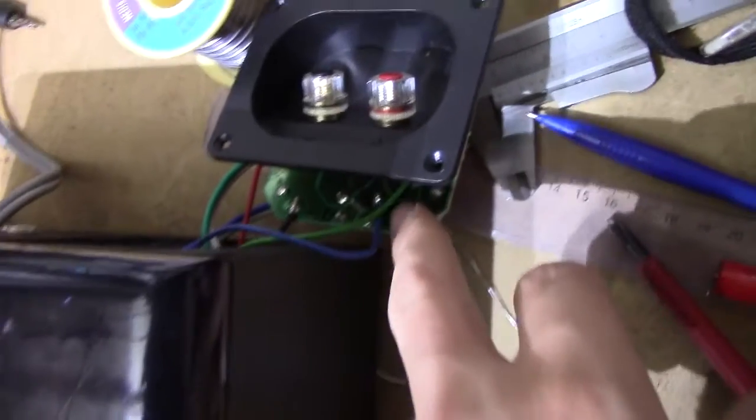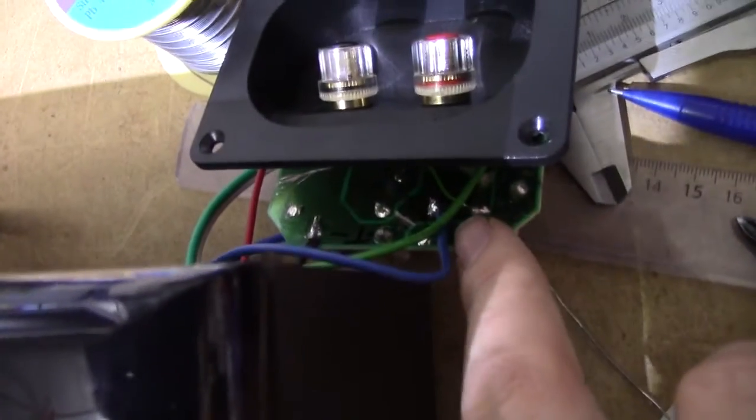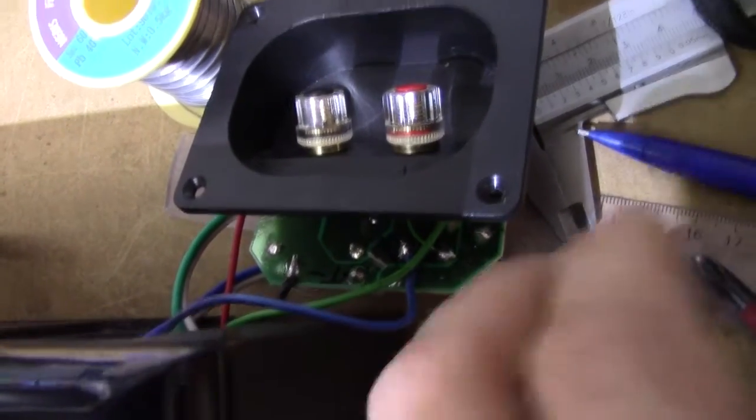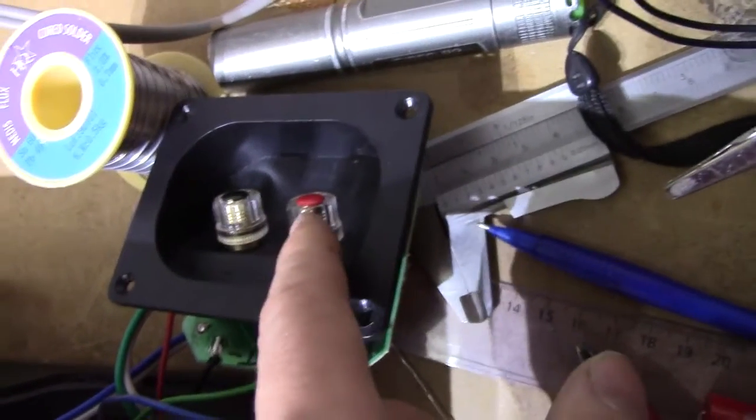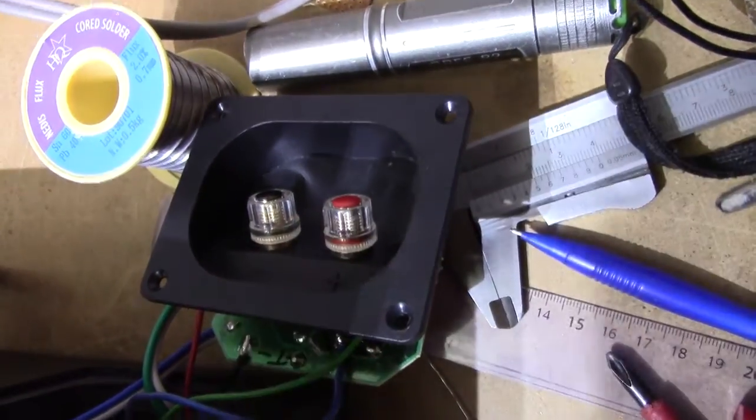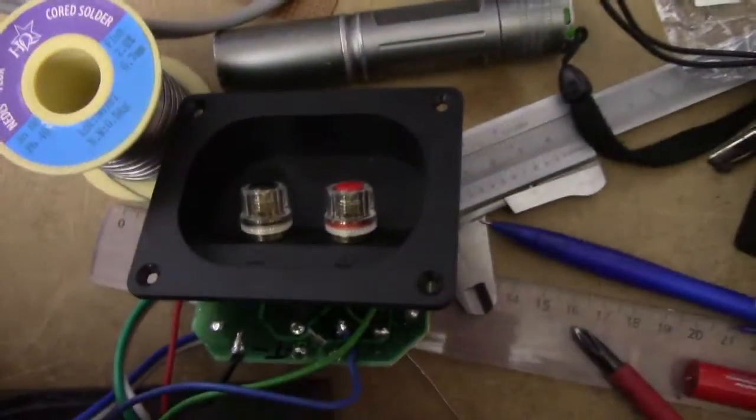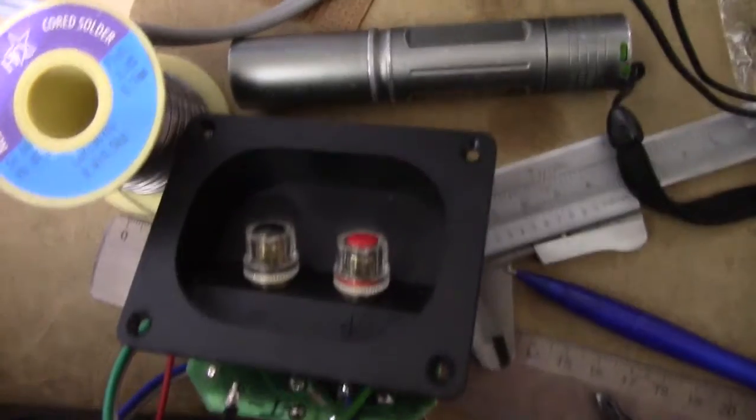Amusingly, since I modified this filter for the speaker to be bi-amplified, it turned out the woofer connection actually ended up being parallel with these, so if I want to I can just connect another speaker up there and get a bit of extra sound, still mono of course.